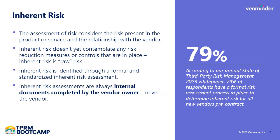So let's start off with inherent risk — what is it and how do we use it? It's present in every vendor relationship to some degree. When we're thinking about that risk, we're always identifying and measuring the amount of risk that naturally occurs. We're not thinking about any potential processes, tools, or controls that we can use to reduce that risk — inherent risk is that raw or untreated risk. The best way to identify and measure these risks is through a formal and standardized inherent risk assessment. That inherent risk assessment is always an internal document and should be completed by the vendor owner or the individual in the organization who wants to engage that vendor. Inherent risk assessments are never completed by the vendor. Later in the process, we will ask the vendor to provide information in the form of a vendor risk questionnaire as part of our due diligence process.